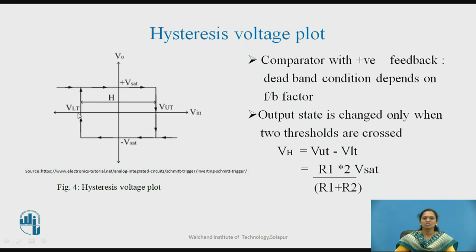The hysteresis voltage can be calculated as the difference between the two threshold points, that is VUT minus VLT. This formula gives the threshold width. When using an inverting comparator, you will always obtain the hysteresis voltage loop in the clockwise direction.